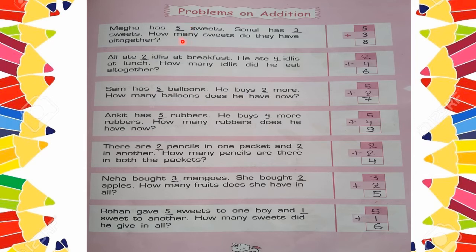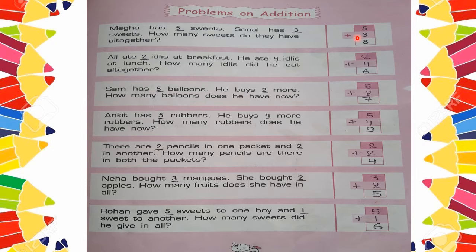The first problem: Mega has 5 sweets, and Sonal has 3 sweets. How many sweets do they have altogether? You have to find the total number of sweets. So 5 plus 3 is equal to 8.